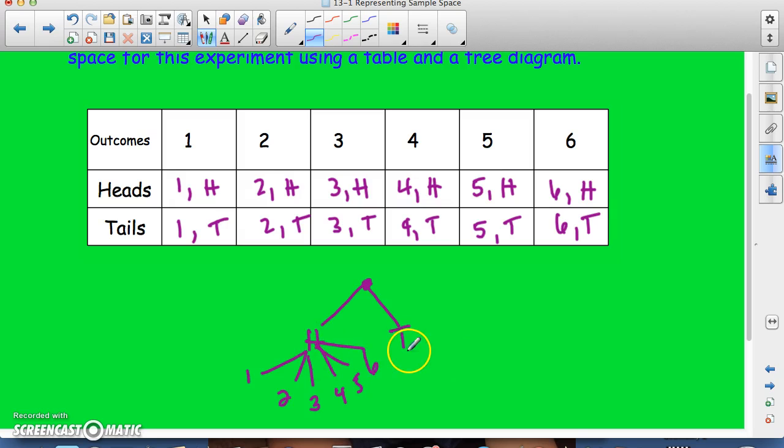And then from here, from your tails, you could also get a one, a two, a three, a four, a five, or a six.